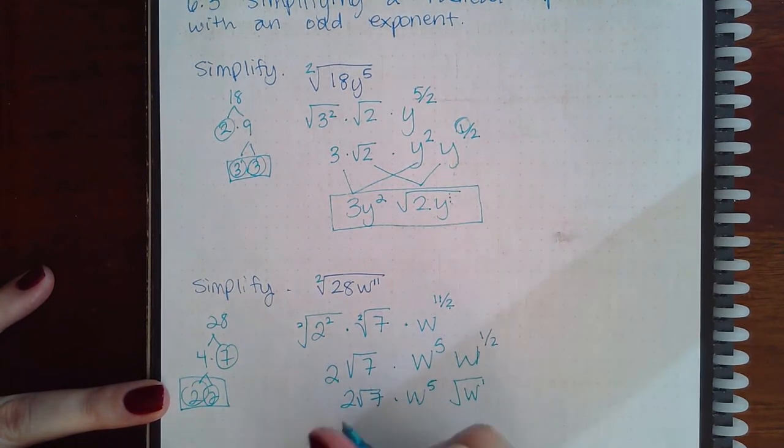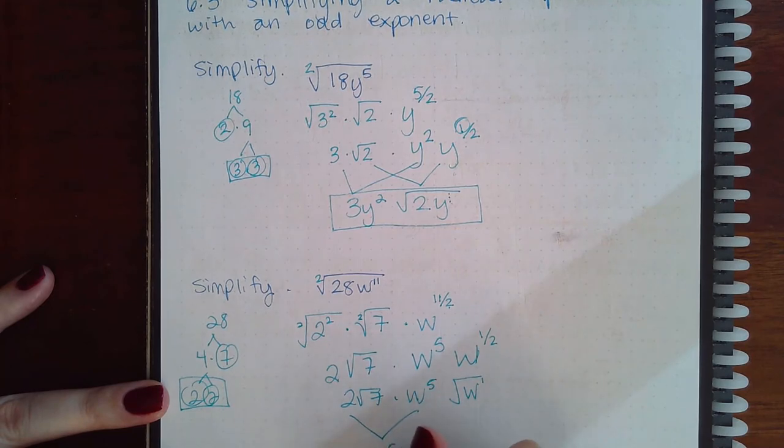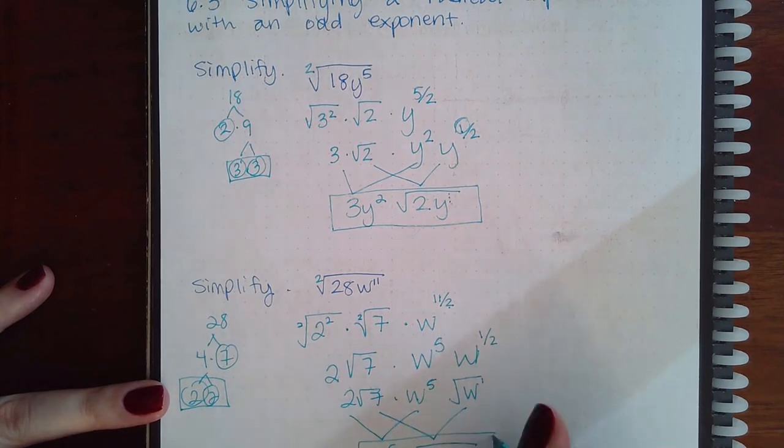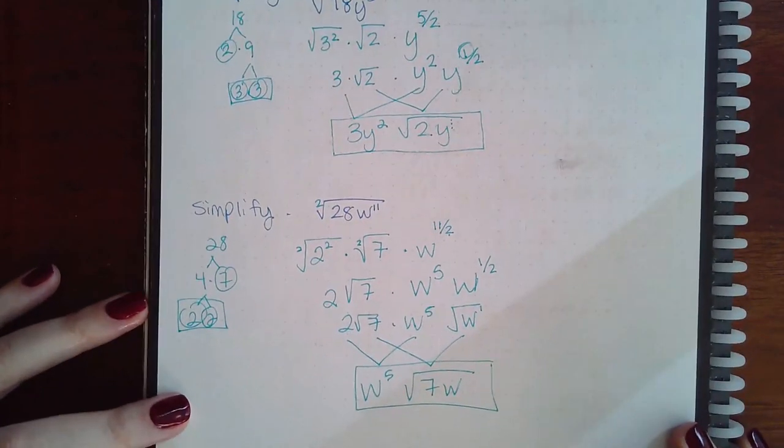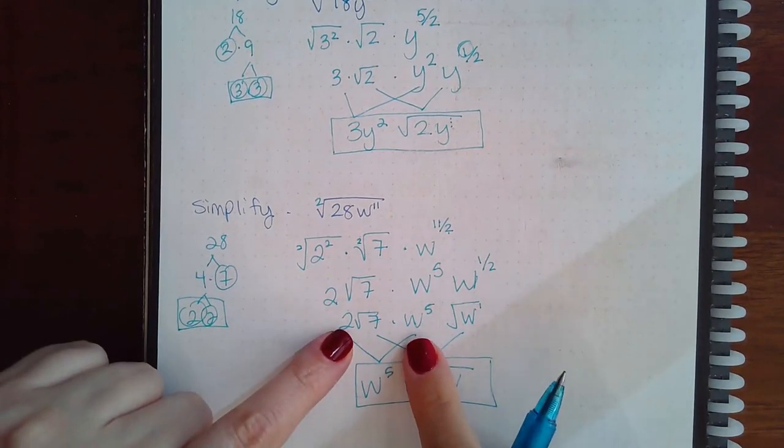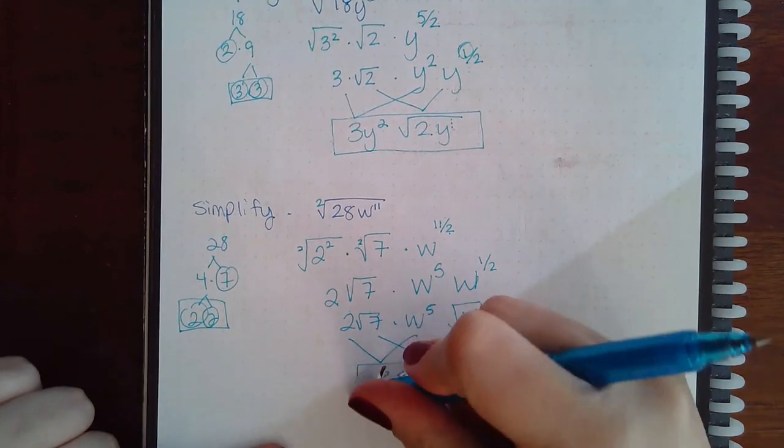And so then it's just a matter of putting the guys that are outside the square root together and then putting the guys that are inside the square root together. And that's the final answer. So the 2 and the w to the 5th are outside the square root.